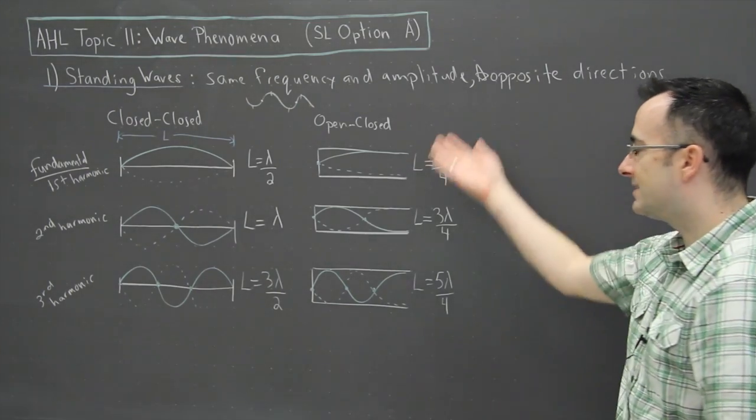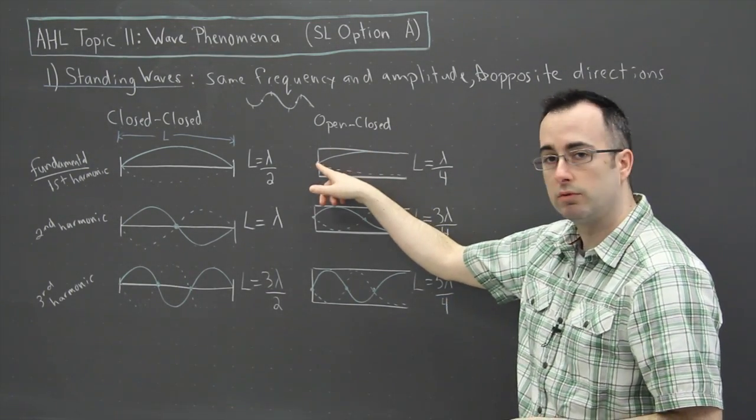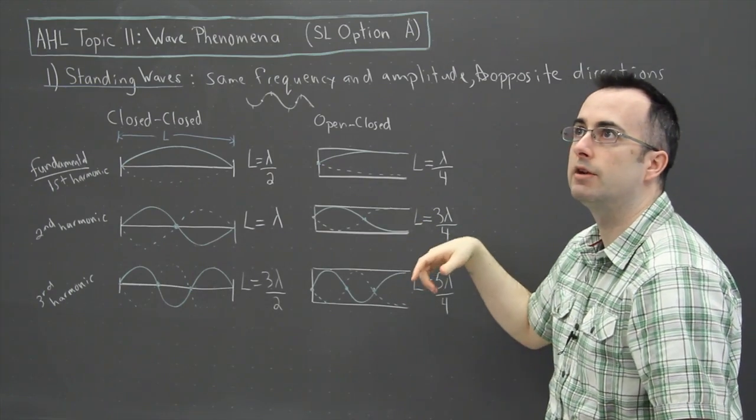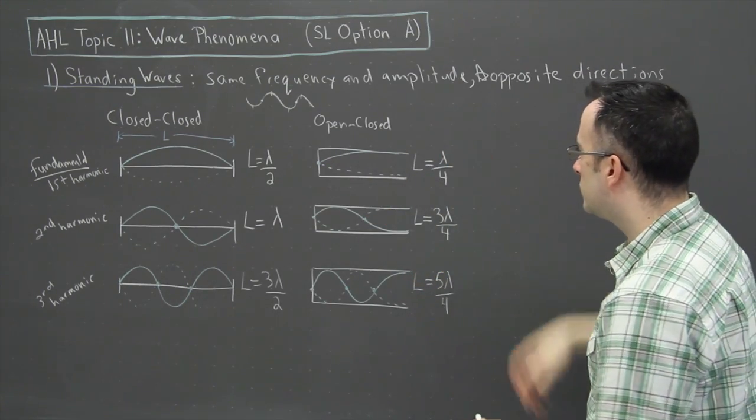So that's the second situation where we have open and closed, in other words, one end open and one end closed. So that could be, like I said, a trumpet, a tuba, something like that, a saxophone. Those all work like this.